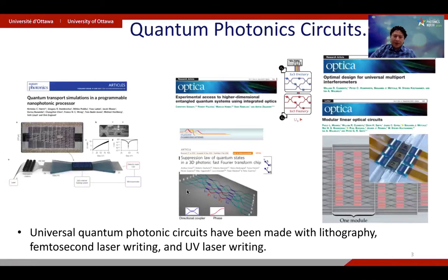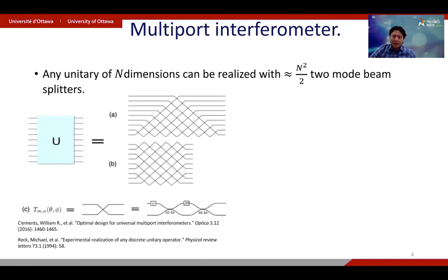In recent years, there's been many papers showing the implementation of this type of quantum photonic circuits. They use a variety of methods like lithography, femtosecond laser writing, and UV laser writing. A common platform is the one of the multi-port interferometer. So early works show that a unitary transformation can be decomposed into a mesh of two mode beam splitters. The number of beam splitters that you require scales quadratically with the dimension of the unitary you want to make.